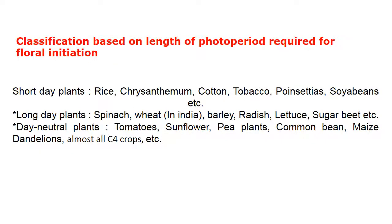The second kind of classification is based on the length of photoperiod required for floral initiation. Based on this, crops are classified as short-day plants, long-day plants, and day-neutral plants. As a memory aid, Kharif crops are mostly short-day plants and the majority of Rabi crops are long-day plants.